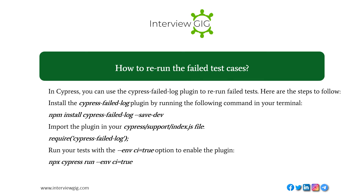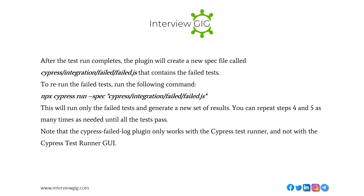How to rerun failed test cases in Cypress? You can use the cypress-failed-log plugin. Steps include: install the plugin via terminal, import it in your Cypress support index.js file, run your tests with the onci=true option to enable the plugin. After the test run completes, the plugin creates a new spec file called cypress/integration/failed/failed.js containing the failed tests. Run that file to rerun only the failed tests and generate new results.